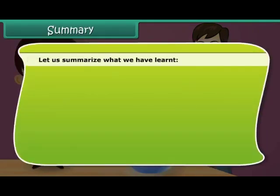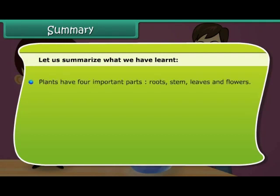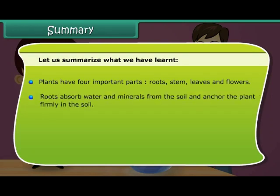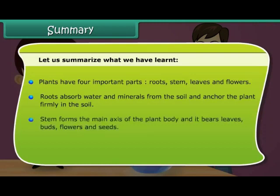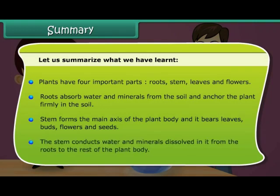Let us summarize what we have learnt. Plants have four important parts: roots, stem, leaves, and flowers. Roots absorb water and minerals from the soil and anchor the plant firmly in the soil. The stem forms the main axis of the plant body and bears leaves, flowers, and seeds. The stem conducts water and minerals from the roots to the rest of the plant body.